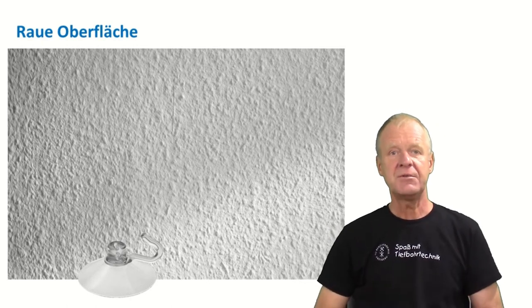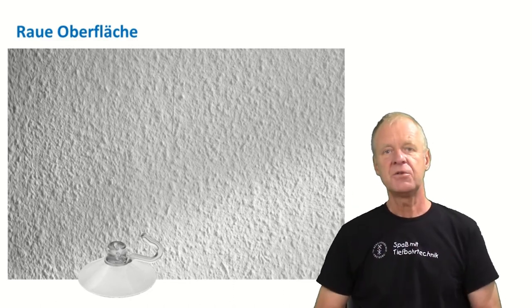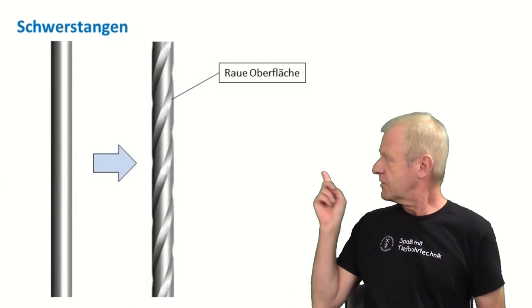We do the same in our deep borehole. Either the borehole wall or the drill string surface needs to be rough. We do not have access to the borehole wall. Therefore, we can modify the surface of the drill string.